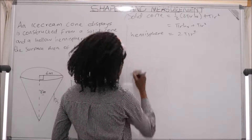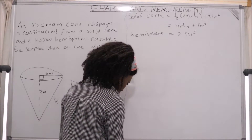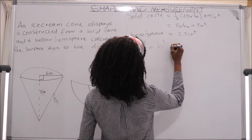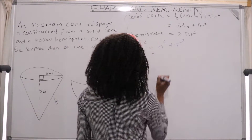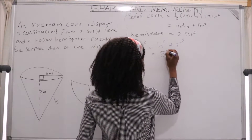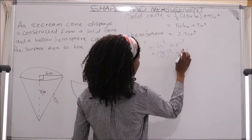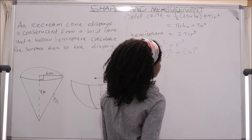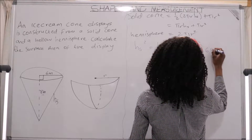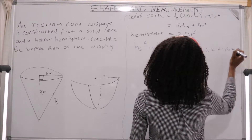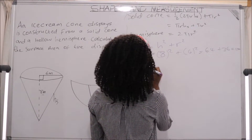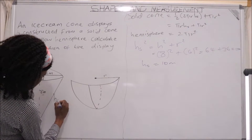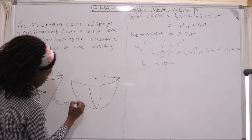Our slant height hs is the hypotenuse. To find it we use the theorem of Pythagoras: hs² = h² + r², so hs² = 8² + 6² = 64 + 36 = 100. Taking the square root, hs = 10 meters.